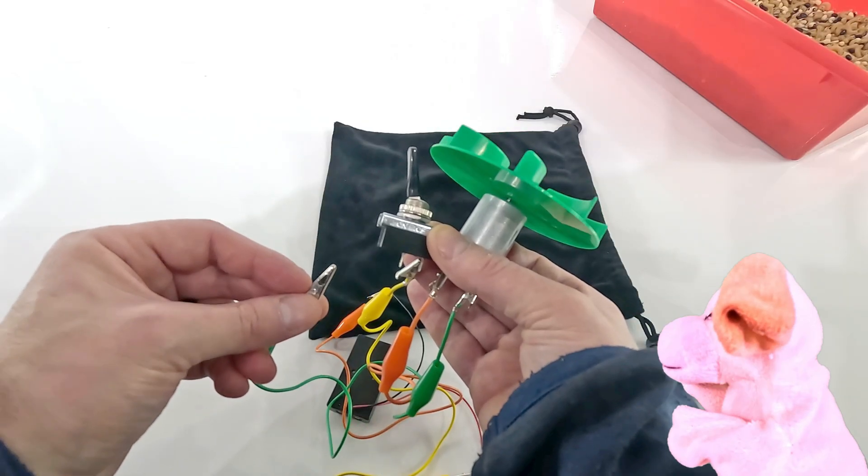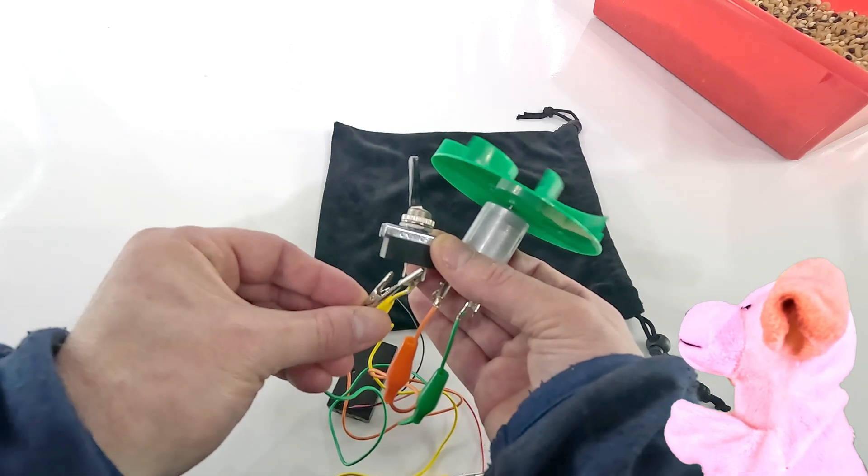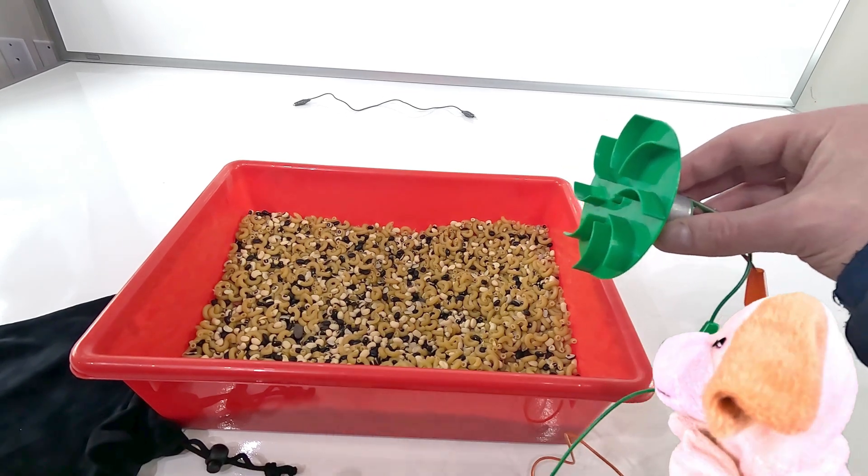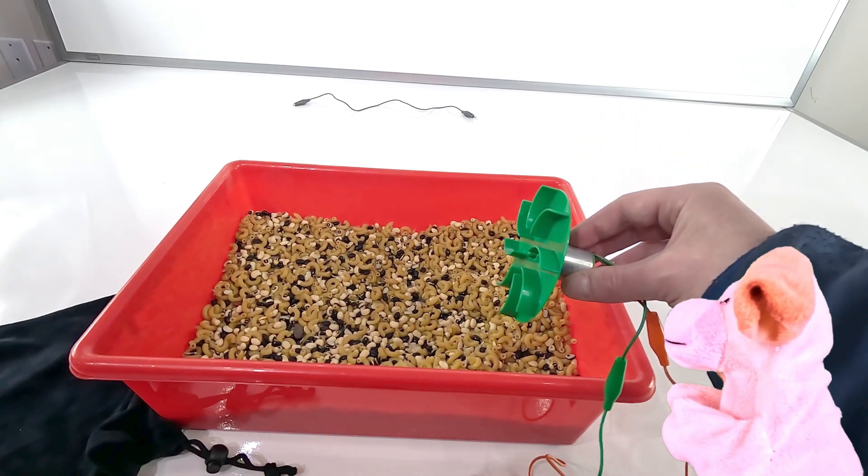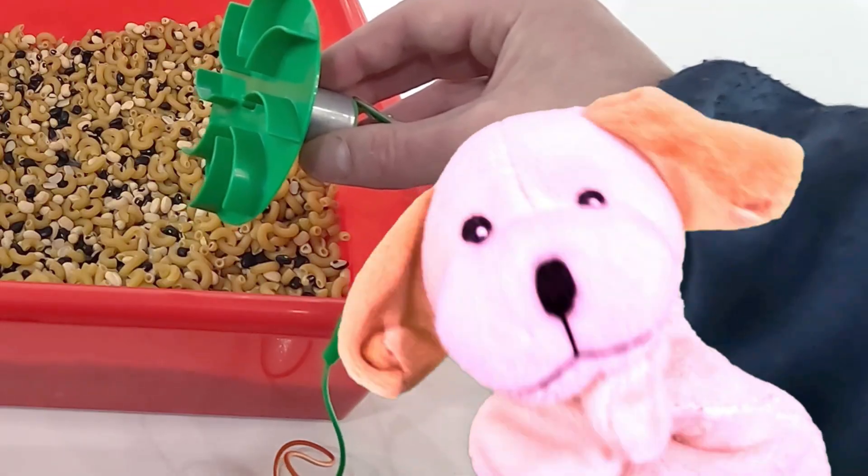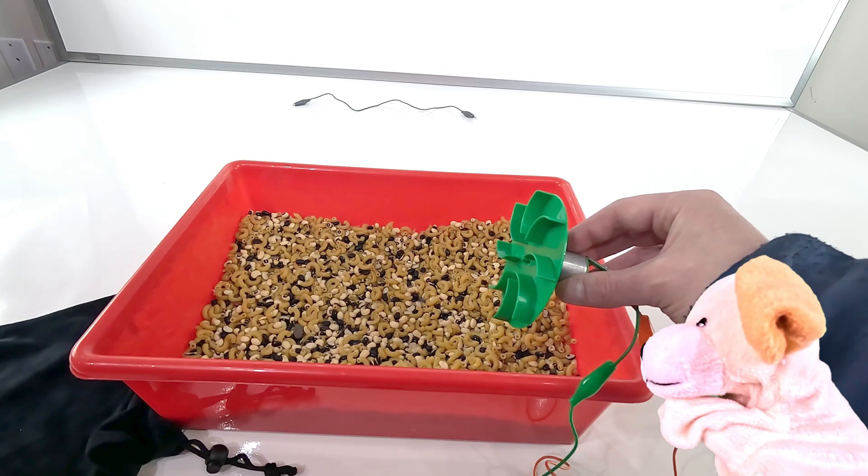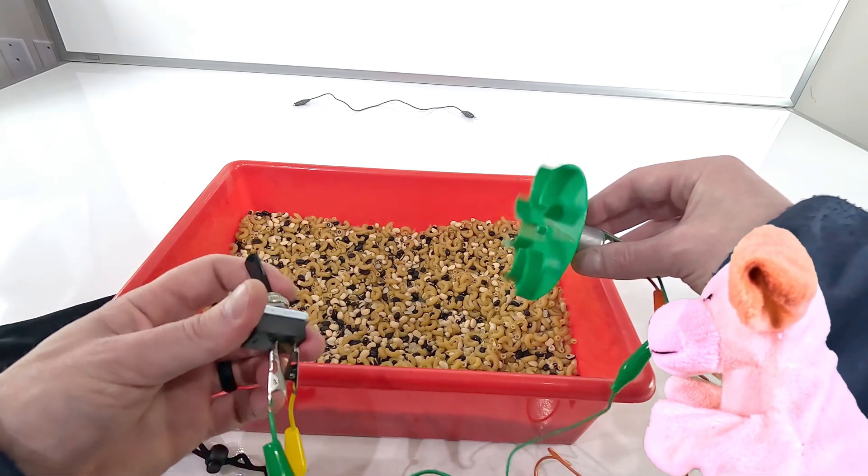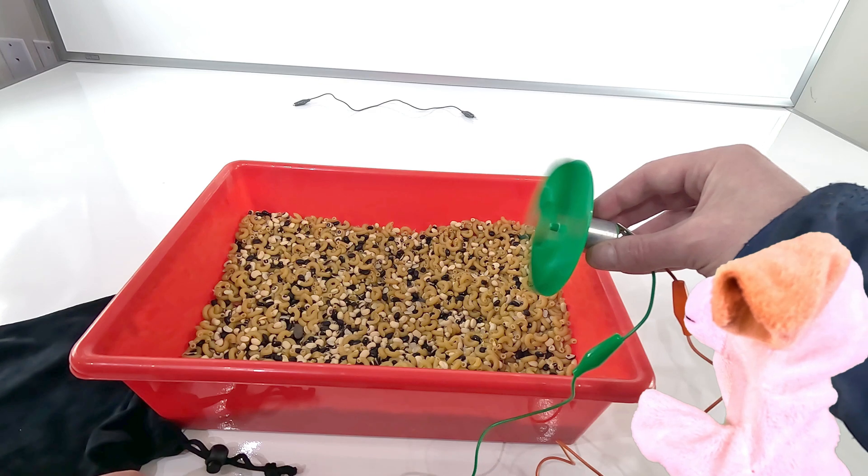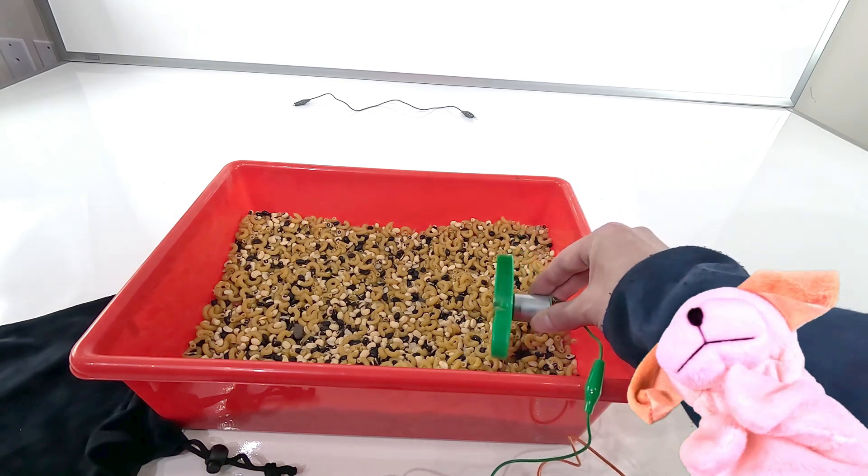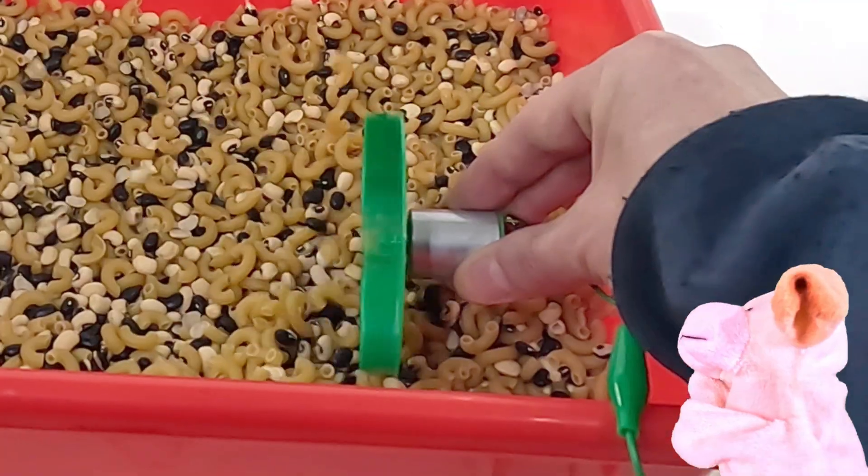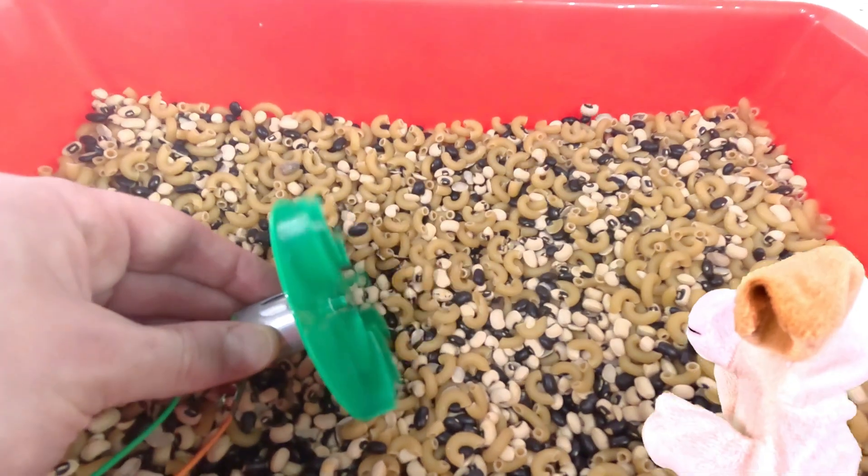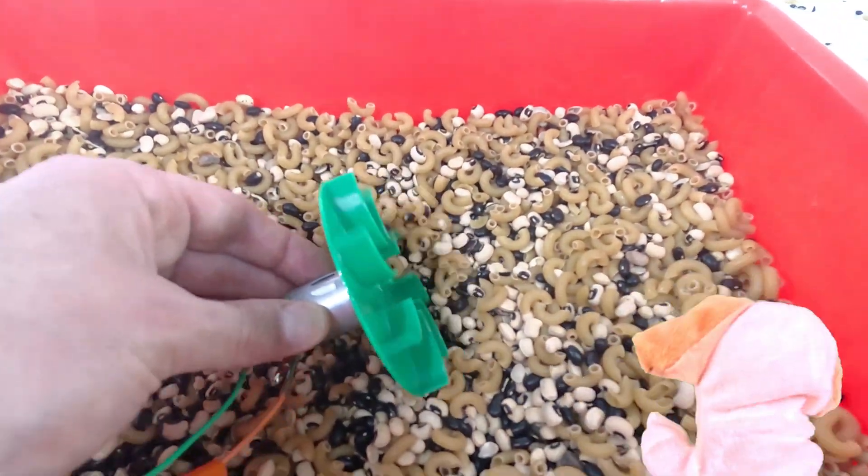So now comes the fun part where we get to test out our motor on this box of beans. But isn't that going to make a mess? Yep, I sure think it will, excite dog. Let's turn on our circuit and everybody hold on to your hats because here we go. Oh, the motor is knocking the beans out of the bin. You got it, excite dog. We're gonna make ourselves a little mess here.